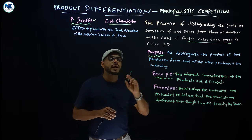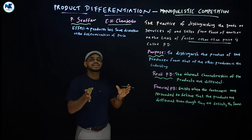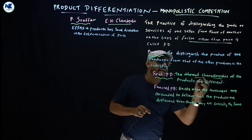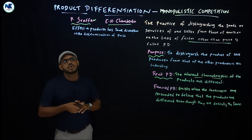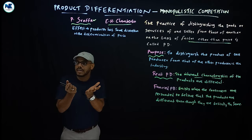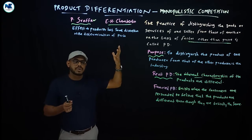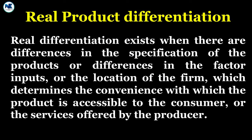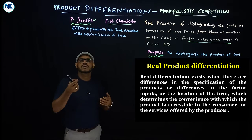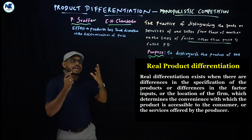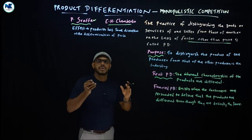Product differentiation can be classified into two types. The first is real product differentiation, where the inherent characteristics of the products are actually different. For example, laptops may differ in hardware configuration, RAM, and capacity. Similarly, cars differ in features and safety features. These represent real or genuine differences between products.